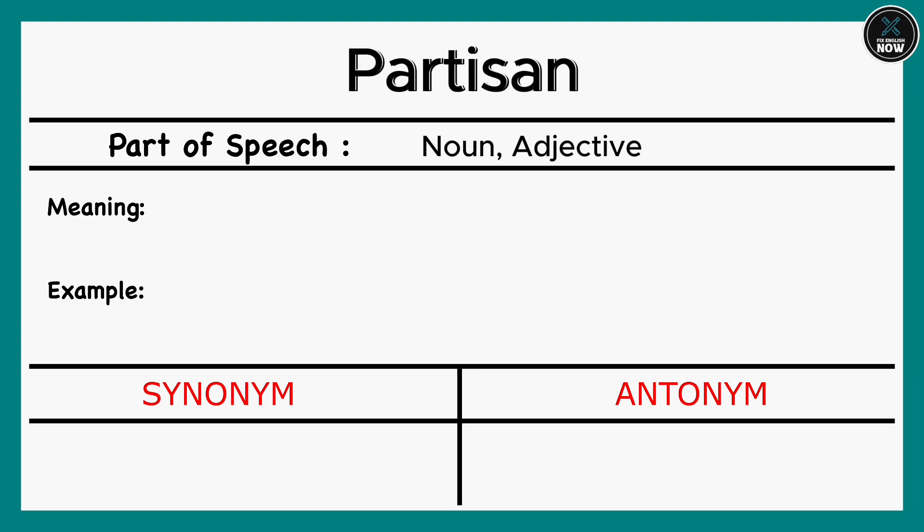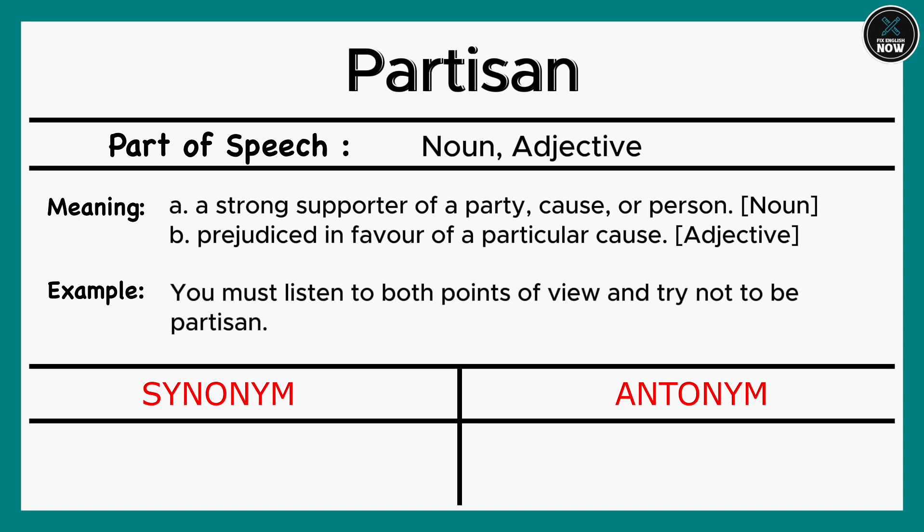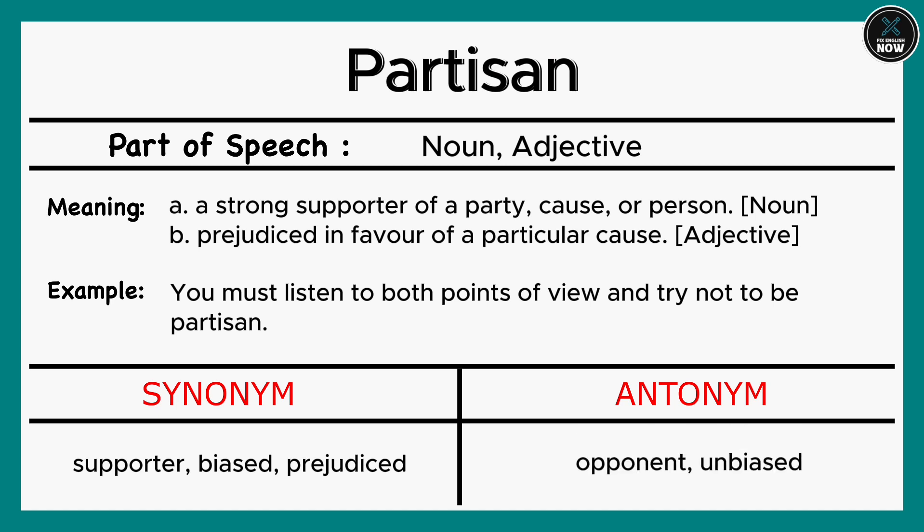Partisan: A. A strong supporter of a party, cause, or person (Noun). B. Prejudiced in favor of a particular cause (Adjective). Example: You must listen to both points of view and try not to be partisan. Synonyms: Supporter, Biased, Prejudiced. Antonyms: Opponent, Unbiased.